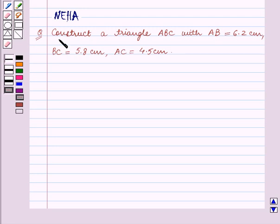Construct a triangle ABC with AB is equal to 6.2 cm, BC is equal to 5.8 cm, AC is equal to 4.5 cm.